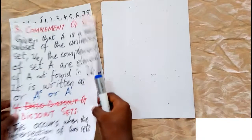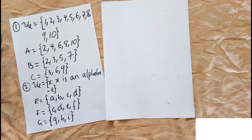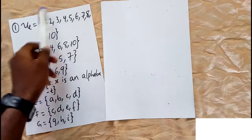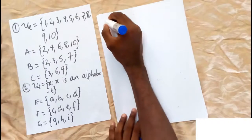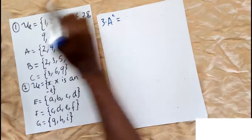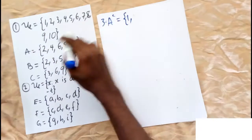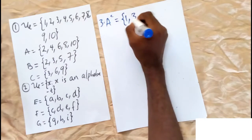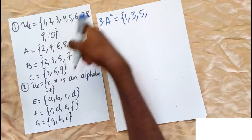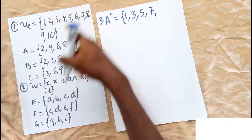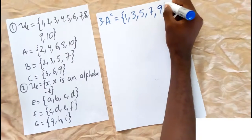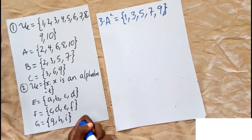For example, A = {2, 4, 6, 8, 10} and the universal set is {1 to 10}. A complement: 1 is not in A so we write 1; 2 is in A so we skip it; 3 is not in A so we write 3; 4 is in A, skip; 5 is not in A, write 5; 6 is in A, skip; 7 is not in A, write 7; 9 is not in A, write 9; 10 is in A, stop. A complement = {1, 3, 5, 7, 9}.